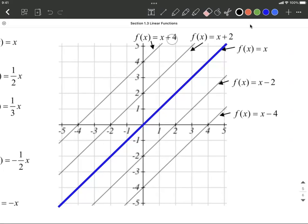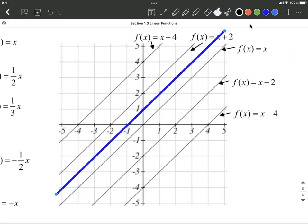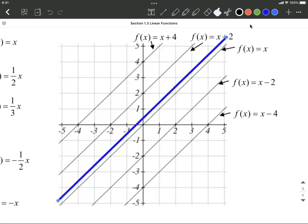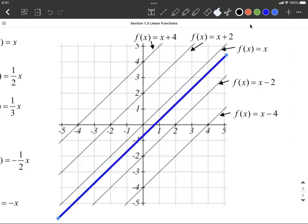Same thing if you have a y-intercept of 4. It's the same blue graph. I'm going to try it one more time. Picked up and moved up 1, 2, 3, 4 units and sat back down. Same thing if you went down 1, 2 units.